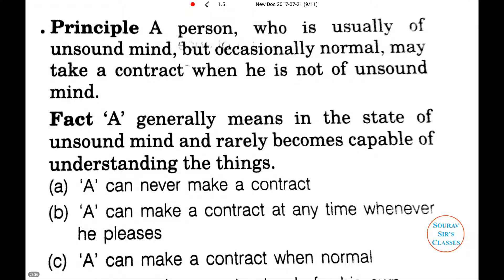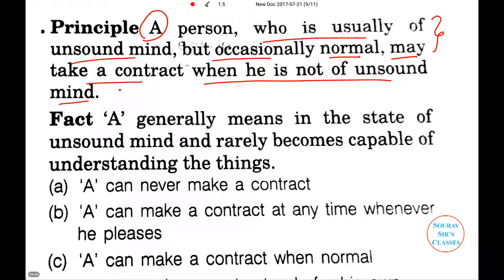The next principle says that there is a person named A who is usually of unsound mind but occasionally normal — sometimes his mind is not functioning well, but sometimes he is normal, meaning his brain is functioning the way it is supposed to. He may take a contract when he is not of unsound mind, that is, when he is normal and absolutely fit. This is the principle.